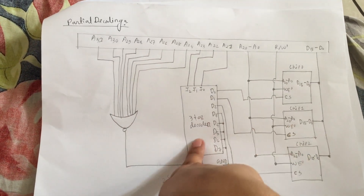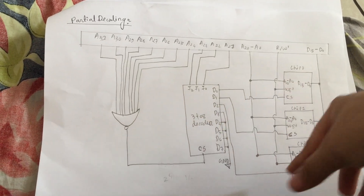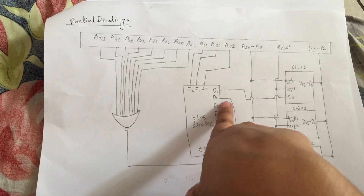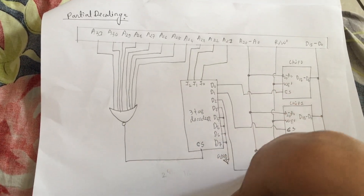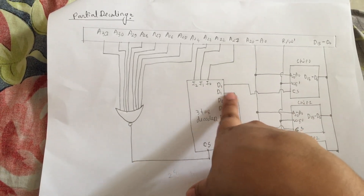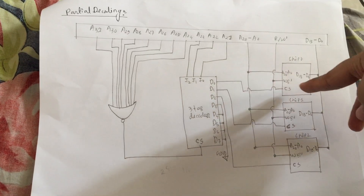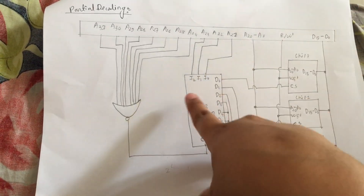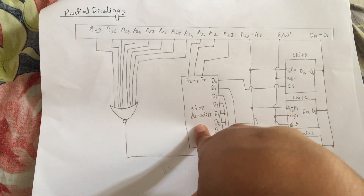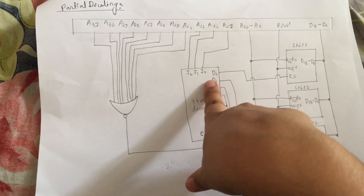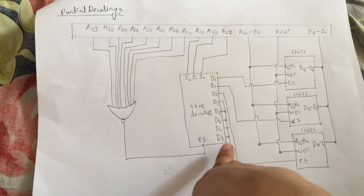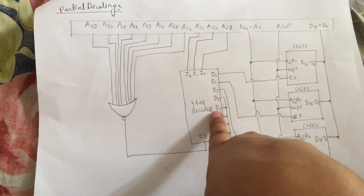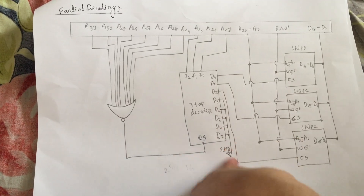We have used a 3-to-8 decoder because we have only three chips, and they go from D0 to D7, so you can easily select the chips. If there were 16 or 20 chips, we would have to increase the decoder. So from D0 to D7, we selected D0, D1, D2, and the others are connected to ground.